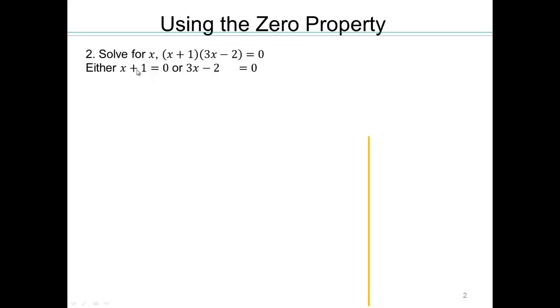Here you can see x + 1 is zero, so that will give you x equals negative 1. What are we going to do here? Add 2 to both sides, so it will be 3x equals 2, and then divide both sides by 3. So negative 1 and 2/3 are your solutions.